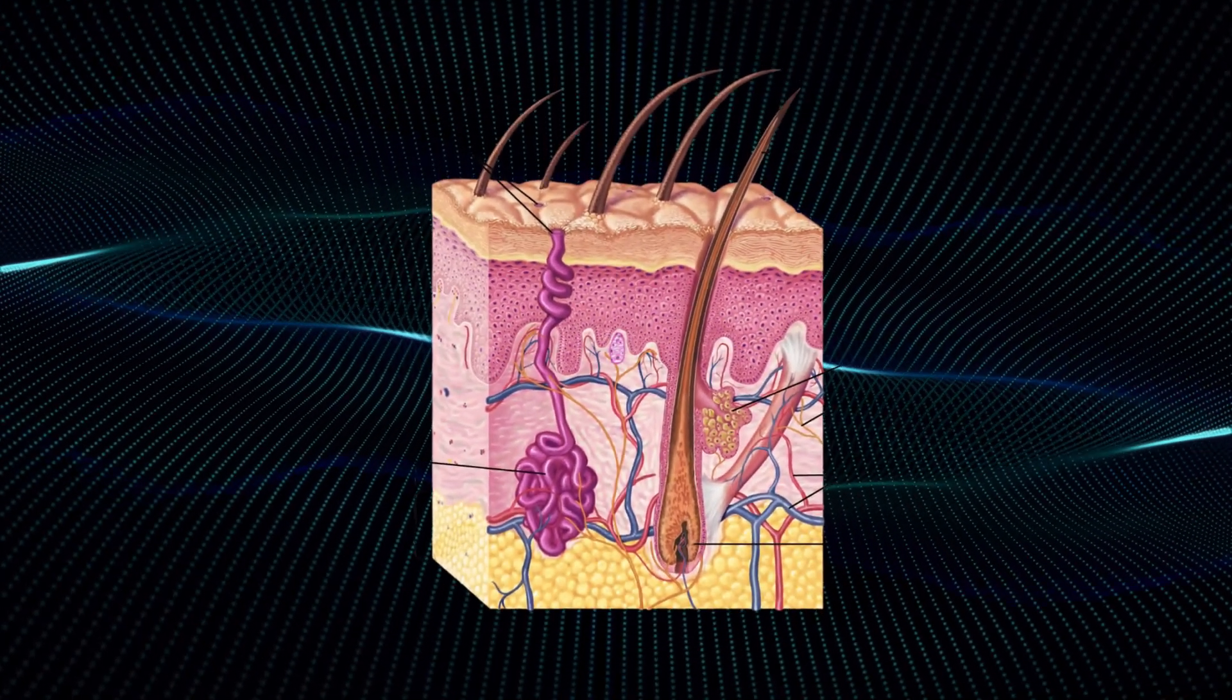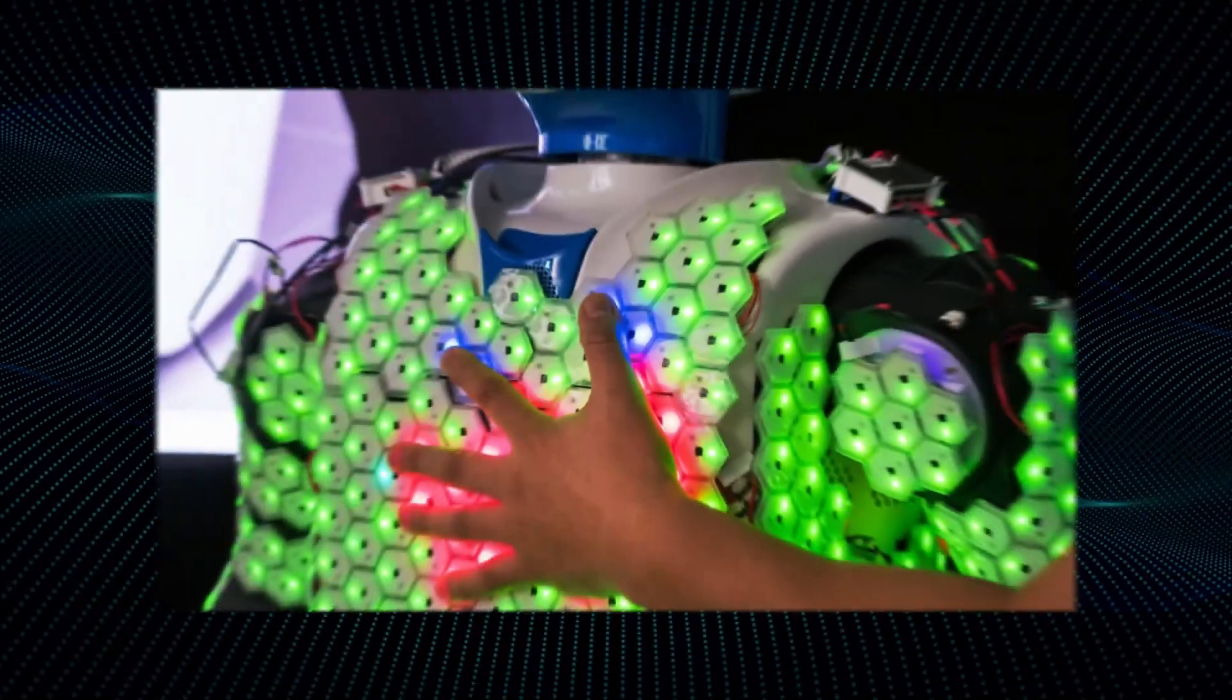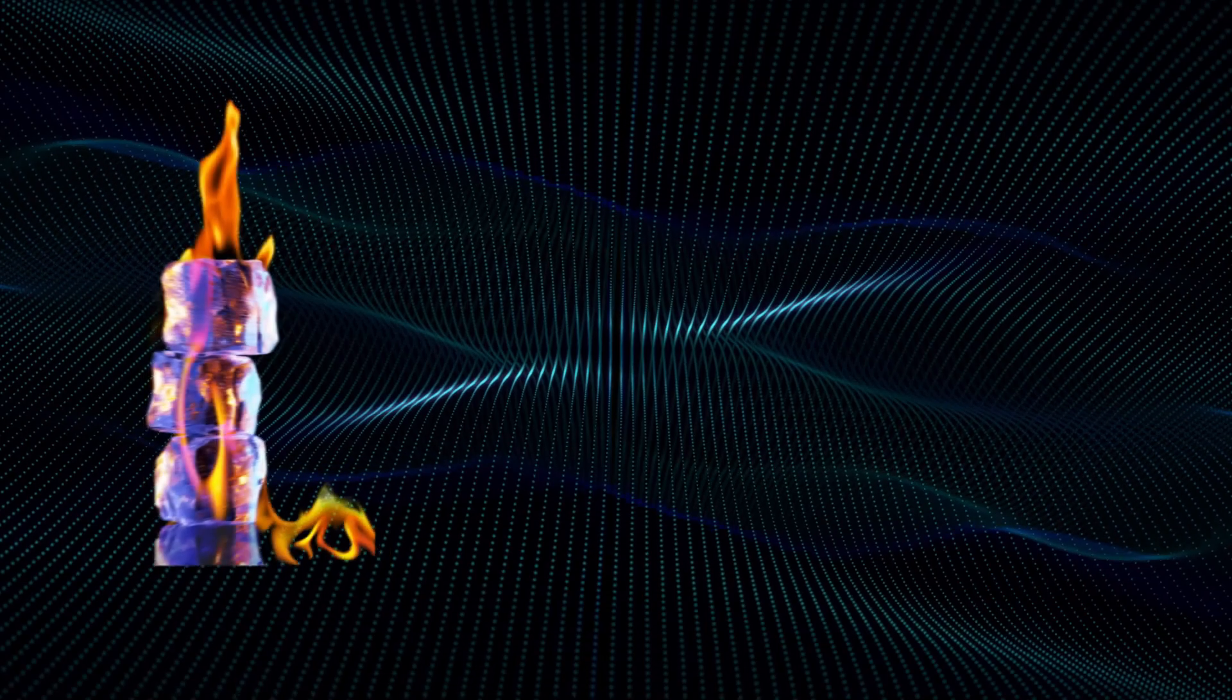But why go through all this trouble to give a robot skin? Well, the skin is our largest organ, and it plays a crucial role in how we interact with the world. It allows us to sense temperature, pressure, and texture, and it's essential for our survival.